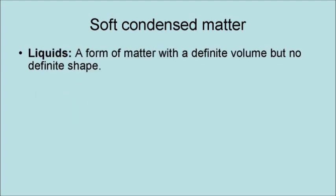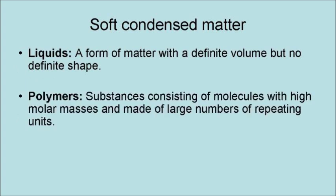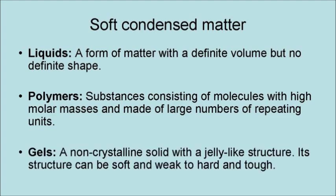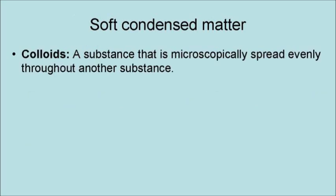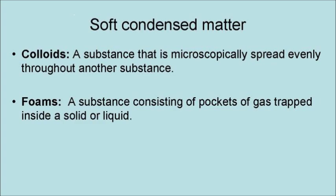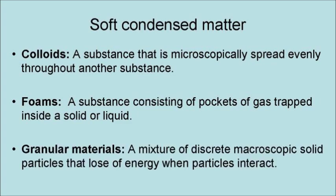Liquids are a form of matter with a definite volume but no definite shape. Polymers are substances consisting of molecules with high molecular mass and made of large numbers of repeating units. Gels are non-crystalline solids with a jelly-like structure that can range from soft and weak to hard and tough. A colloid is a substance that is microscopically spread evenly throughout another substance. Foams are a substance consisting of pockets of gas trapped inside a solid or liquid. Granular materials are a mixture of discrete macroscopic solid particles that lose energy when particles interact.